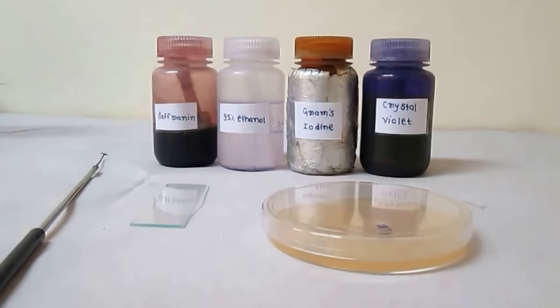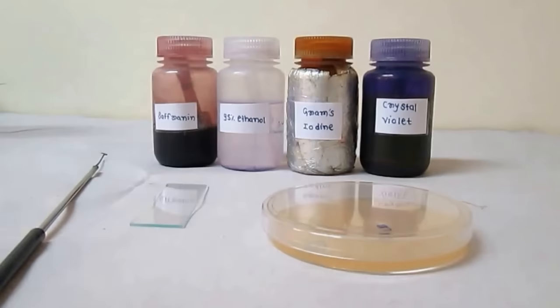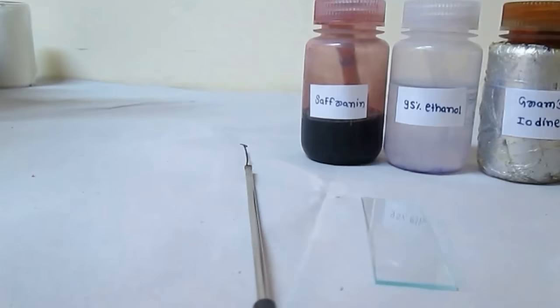These are all the materials required for the Gram staining procedure. First one, sterilized inoculating loop, clean glass slide, a petri plate having the bacterial culture.